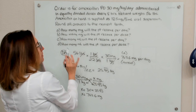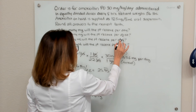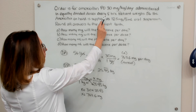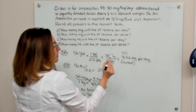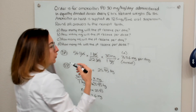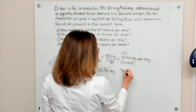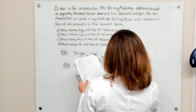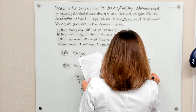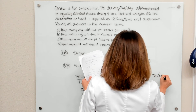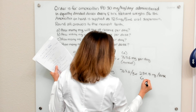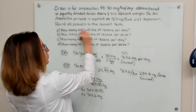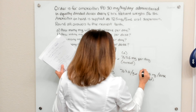Part B asks how many milligrams the patient will receive per dose. Since the medication is given every eight hours — three times a day — we take the daily dose of 763.6 milligrams and divide by three, which gives us 254.5 milligrams per dose, rounded to the nearest tenth. That is the answer to B.